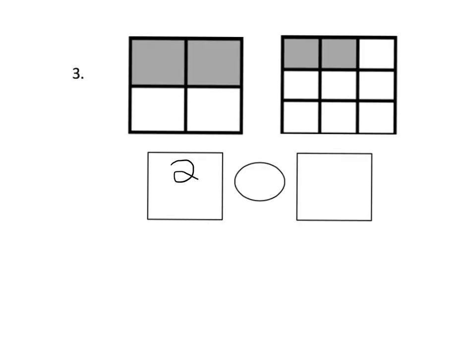Alright, so this one is 2 fourths. And then for this shape, counting 3 columns and 3 rows gives us 9 pieces altogether, and 2 of them are shaded in — so 2 ninths. Which is greater? 2 fourths is greater. The open side of the symbol is taller toward the bigger fraction. So 2 fourths is greater than 2 ninths.